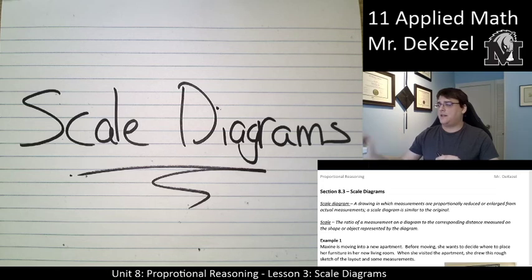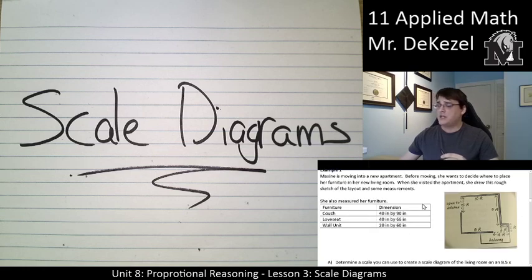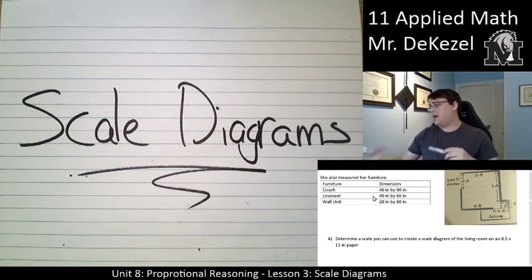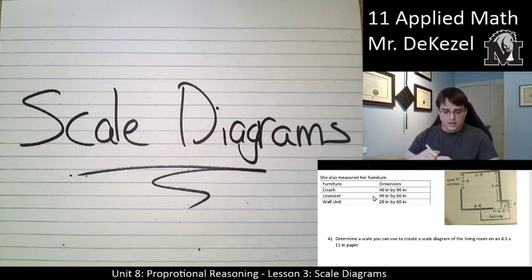So let's get into the first example. This one's going to take a little bit of time. We're actually going to draw a proportional diagram and we're going to come up with that scale first. Example one: Maxine is moving into a new apartment. Before moving she wants to decide where to place her furniture in her new living room. So when she visits she drew this rough sketch of the layout and took some measurements. We're going to focus on the room measurements and we're going to look at question A here.